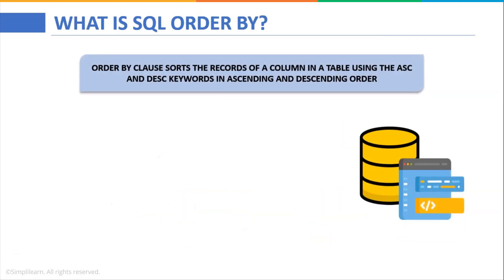Next let us understand what is SQL ORDER BY statement. The ORDER BY clause in SQL sorts the data of a column in the SQL database. It helps us sort the column in both ascending as well as descending order. The ASC keyword helps us sort in ascending order while the DESC keyword sorts in descending order.